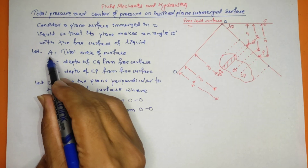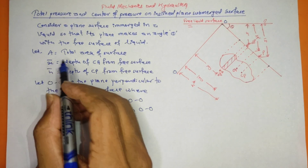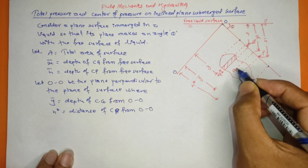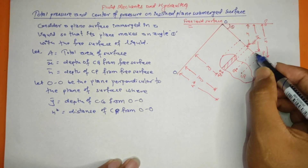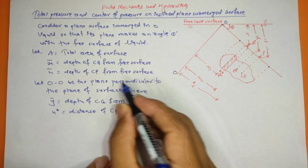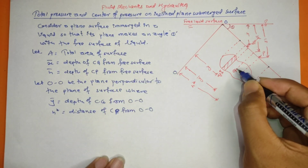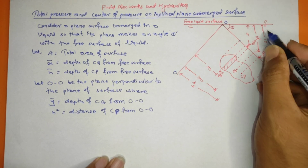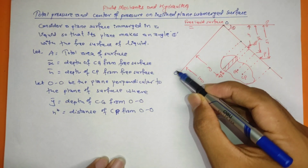This is the total surface area. x-bar is the depth of the center of gravity from the free surface. The body's center of gravity is CG. CG is the vertical distance from the free liquid surface. x-bar is the depth of the center of pressure (CP) from the free surface. The center of pressure depth is h-bar. This is the inclined plane with the O-O plane.